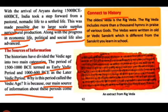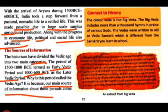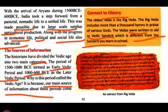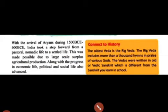The Rigveda contains hymns in praise of various gods - char so se adhik Vaidik bhajan, ya yun kahen strotras, shlokas, Bhagwan ki prashansa mein likhe gaye hain. The Vedas were written in old Vedic Sanskrit, which is different from the Sanskrit you learn in school. Aur jo ye Vedas hain, ye Vaidik Sanskrit mein likhe hain jo ki hamaari aaj ki Sanskrit, jo aap school mein padhte hain, usse kaafi zyada alag hain.